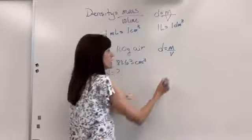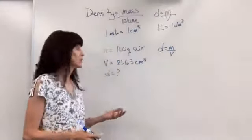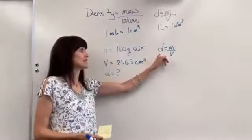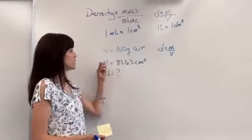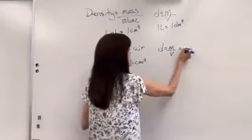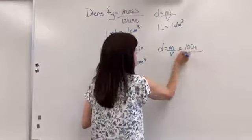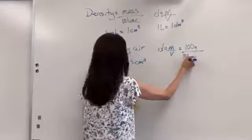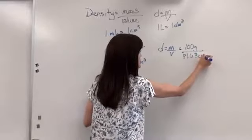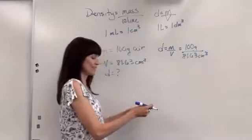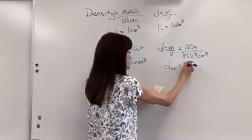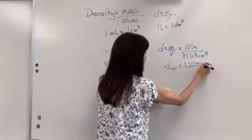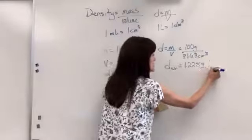Density equals mass over volume. You simply solve for the unknown. This one's nice. Density is already by itself. So we can go ahead and plug everything in. So we're going to have 100 grams divided by 81.63 centimeters cubed. Put that in your calculator and the density of air equals 1.225 grams per centimeter cubed.